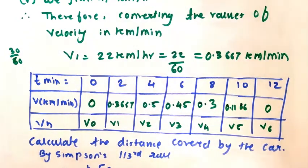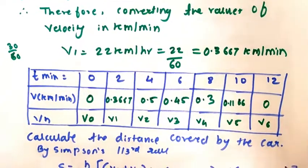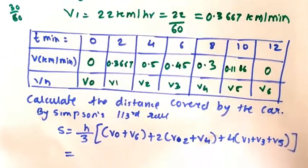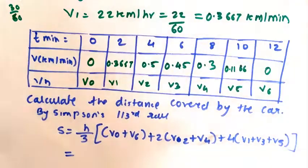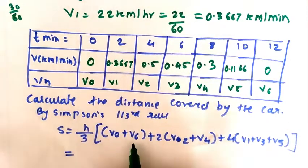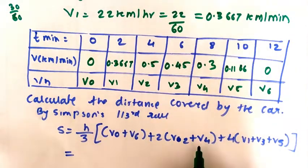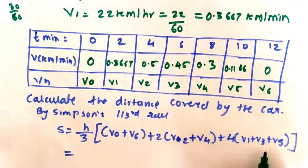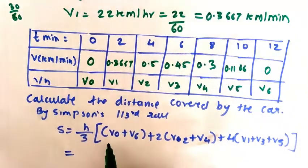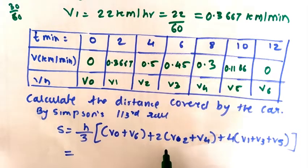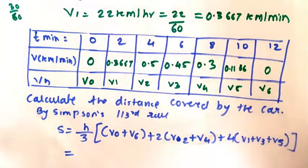Next step is to calculate the distance covered by the car with the help of Simpson's 1/3rd rule. So what is the Simpson's 1/3rd rule? Formula is h/3, this is y0 plus yn, initial and final value, final value is v6. Plus twice even values. Twice into even value, all the even values you have to add here. Plus 4 into all odd values. So the formula will be h upon 3, the bracket, v0 plus v6, plus twice v2 plus v4, plus 4 into v1 plus v3 plus v5. Putting the value of v's in this equation.